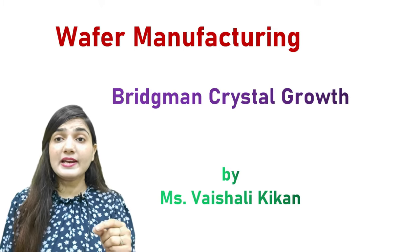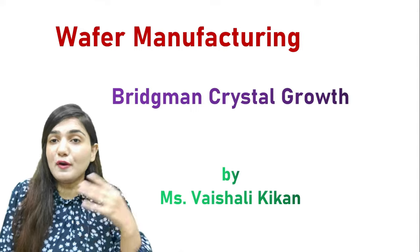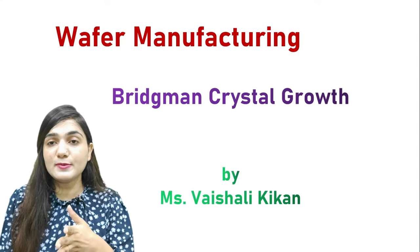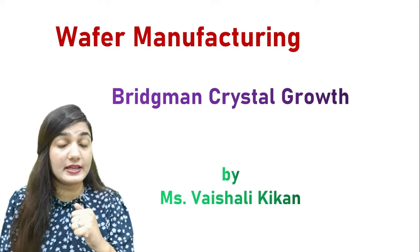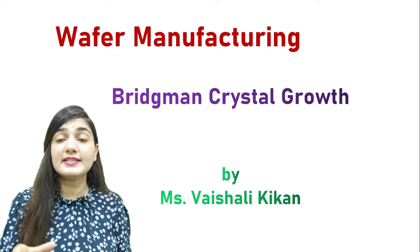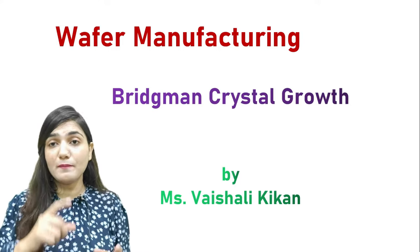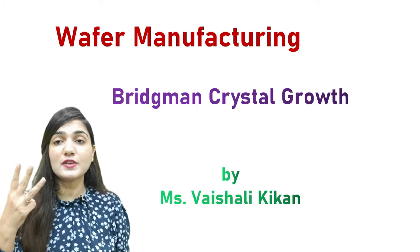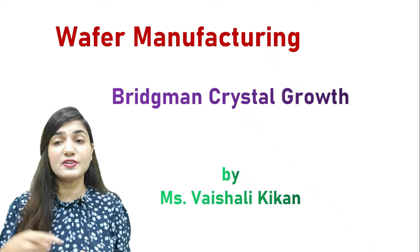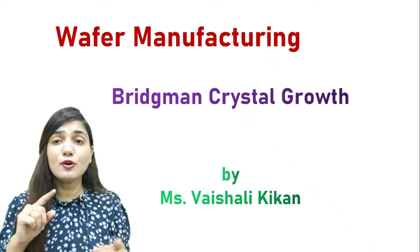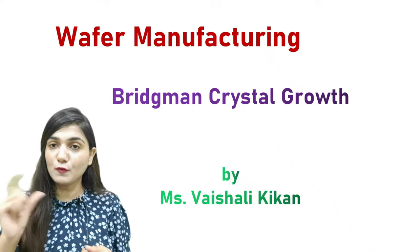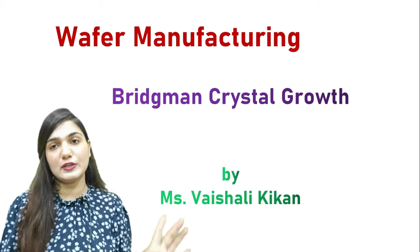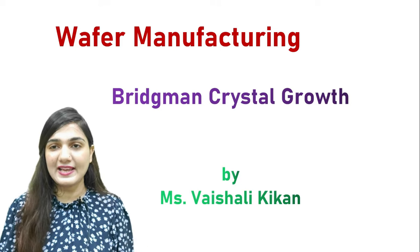Until now we have seen how we make electronic grade silicon from sand. We made MGS, then TCS and EGS. Now we have electronic grade silicon in polycrystalline form. We have to make a single crystal silicon structure, for which we are going to study three processes: the Bridgman crystal growth process, the Czochralski process, and the floating zone method.